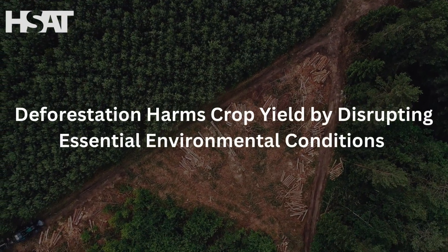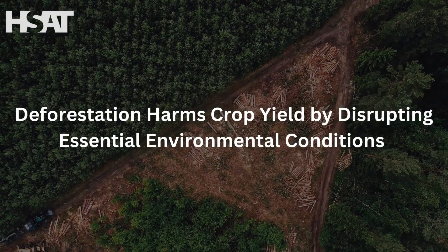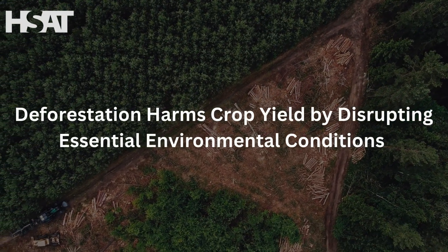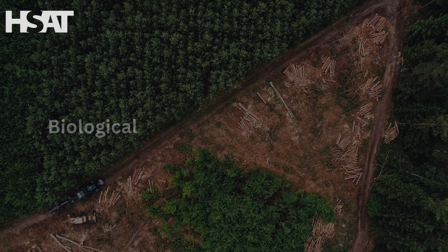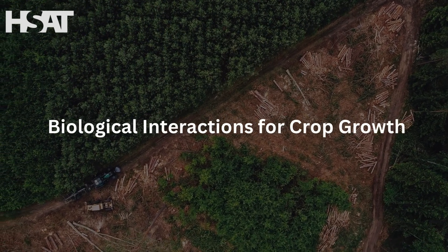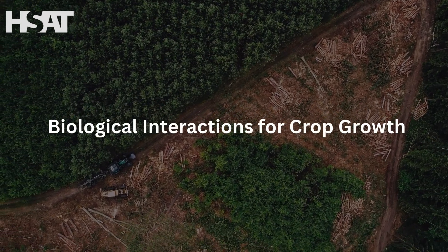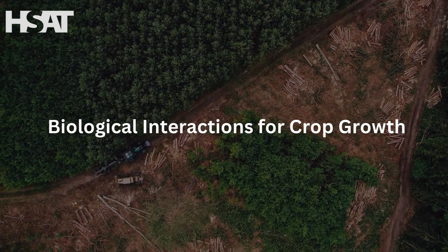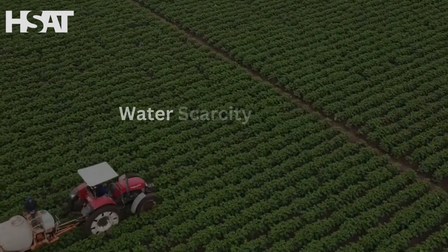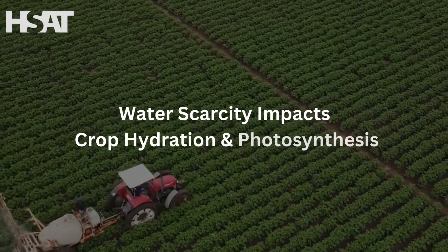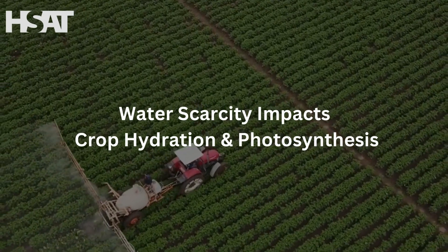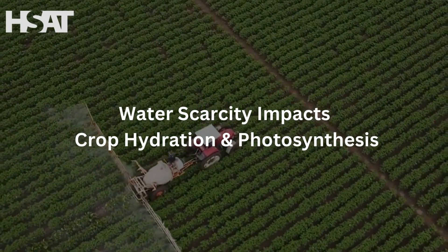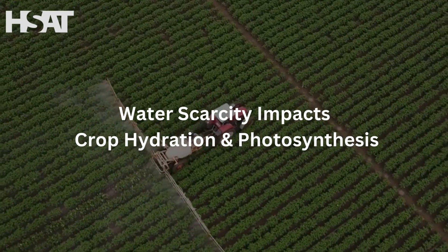Deforestation negatively impacts crop yield by changing environmental conditions and biological interactions essential for crop production. It can reduce water availability and quality, affecting crop hydration and photosynthesis.